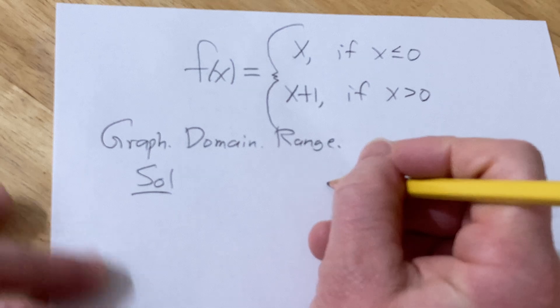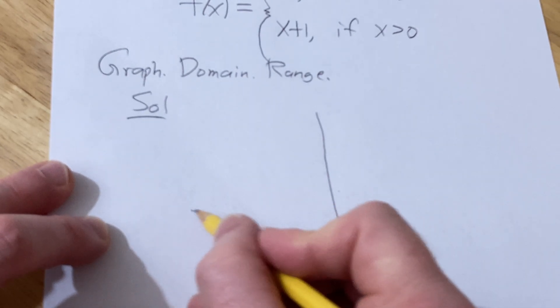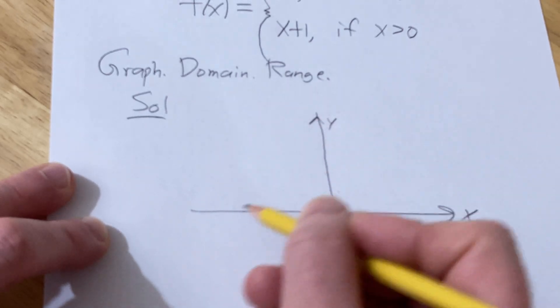Let's go ahead and go through it. Solution. Start by drawing the y-axis and then the x-axis. So there's x, there's y.